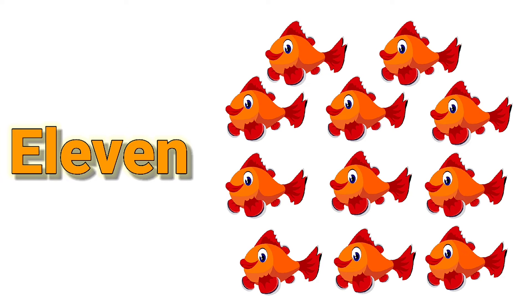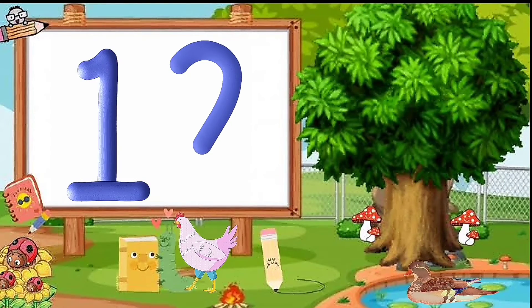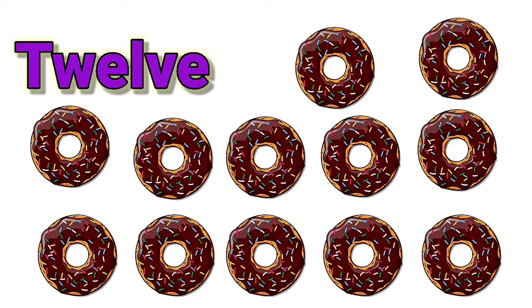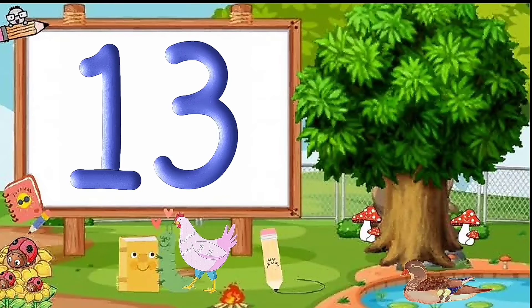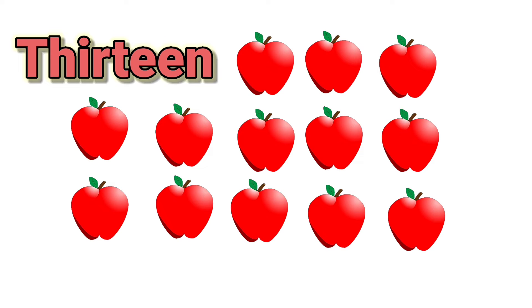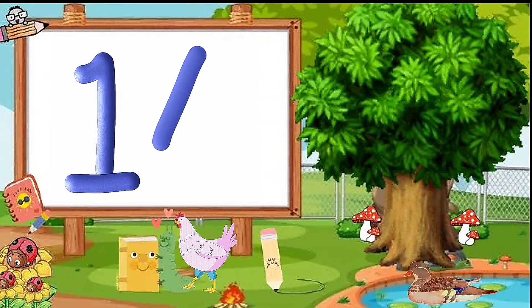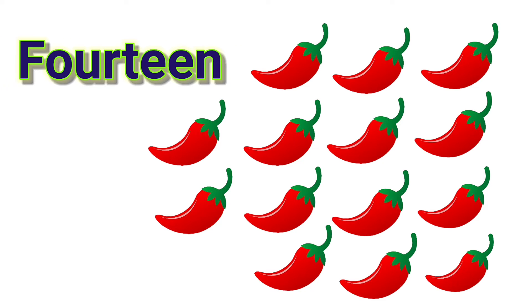11 — E-L-E-V-E-N — 11 fishes. 12 — T-W-E-L-V-E — 12 Donuts. 13 — T-H-I-R-T-E-E-N — 13 Apples. 14 — F-O-U-R-T-E-N — 14 Chillies.